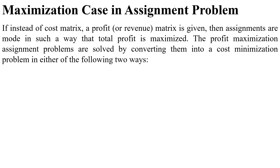In the present video, we will discuss the maximization case in assignment problem. In the minimization case, a cost matrix is given and we have to minimize the total cost by optimal assignment. In the maximization case, instead of a cost matrix, a profit matrix is given, and assignments are made such that total profit is maximized. These problems are solved by converting them into a cost minimization problem by either of the following two ways.